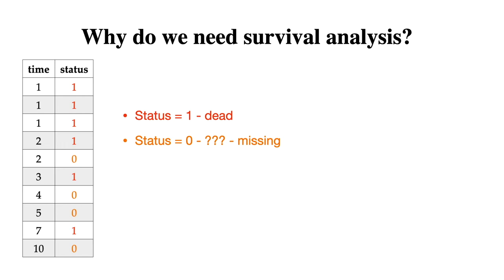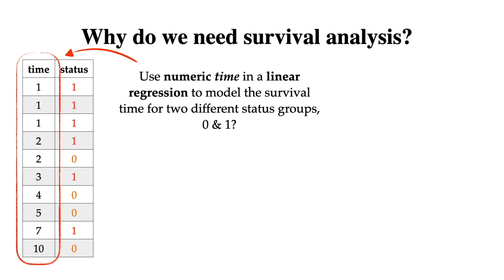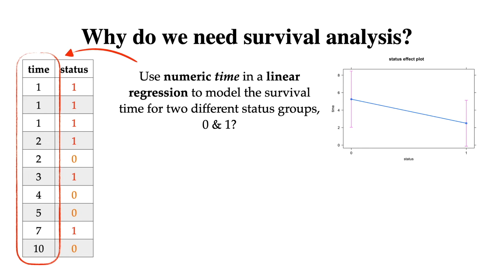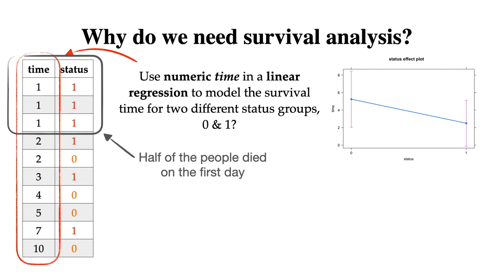How do we analyze this data? My first intention was to use the numeric variable time in linear regression to model the survival time for two status groups — zeros and ones. But when I modeled and plotted the results, I realized something wasn't quite right. All we have is zeros and ones, and the average time of dying is about two and a half days — it misses a lot of information. For instance, half the people, namely three persons, died on the very first day, and the further we go in time, the fewer people die. So average is kind of useless and dying is not really linear.